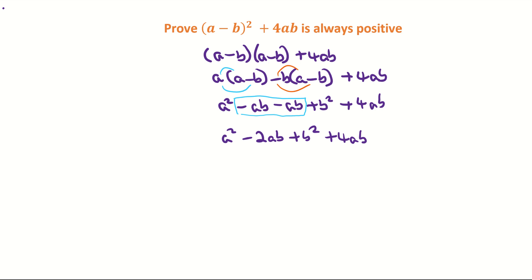Next step, I'm going to put the minus 2ab and the positive 4ab together. So minus 2 plus 4 is making positive 2ab. So a² + 2ab + b².